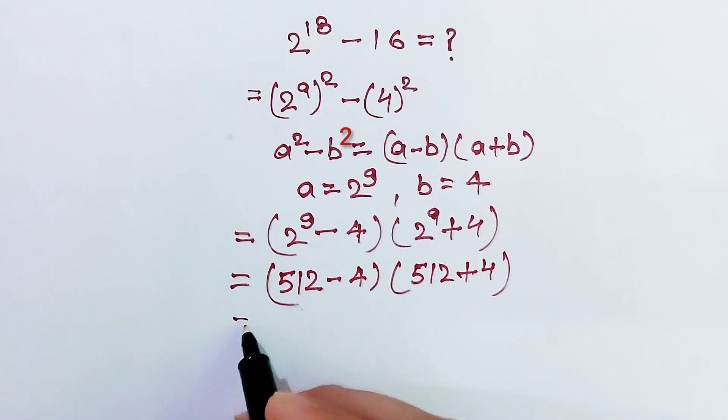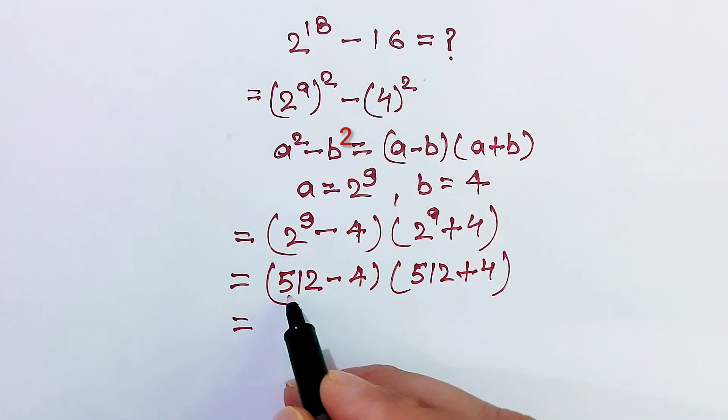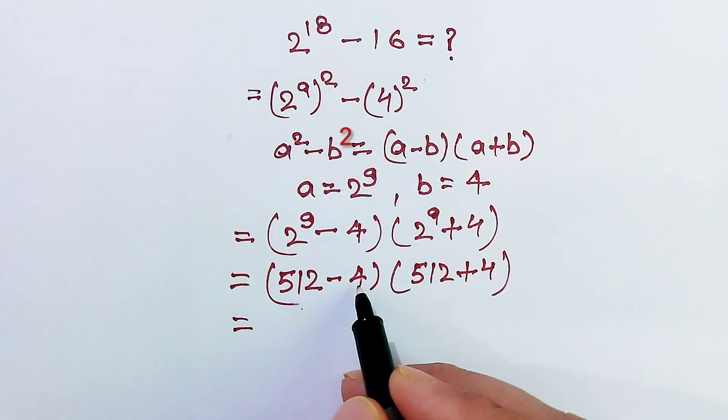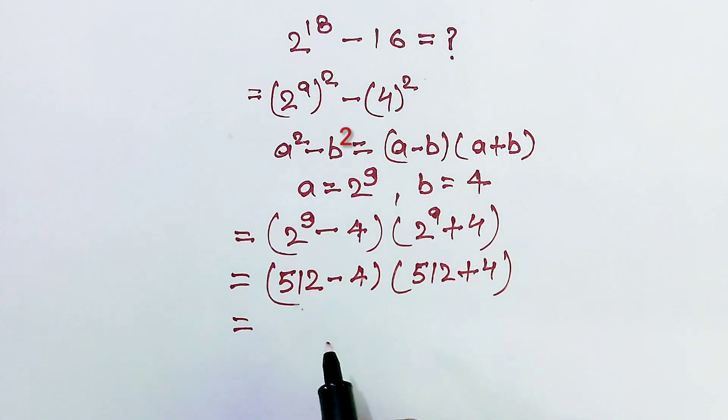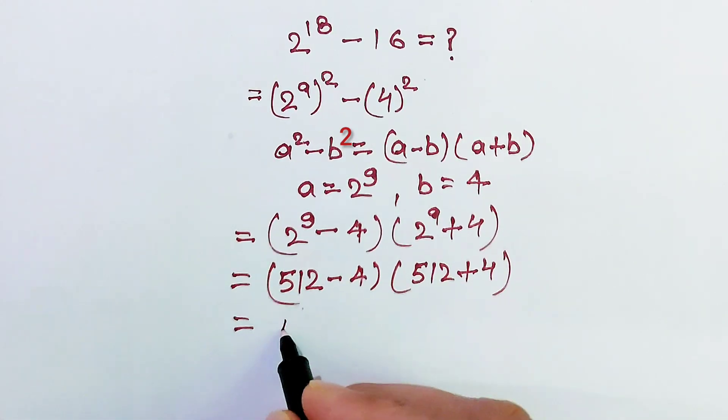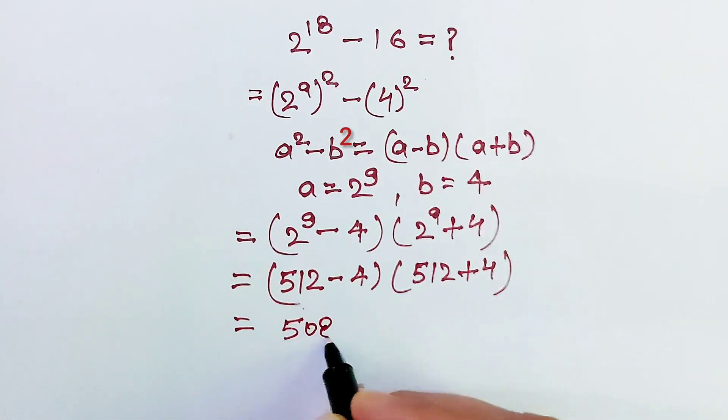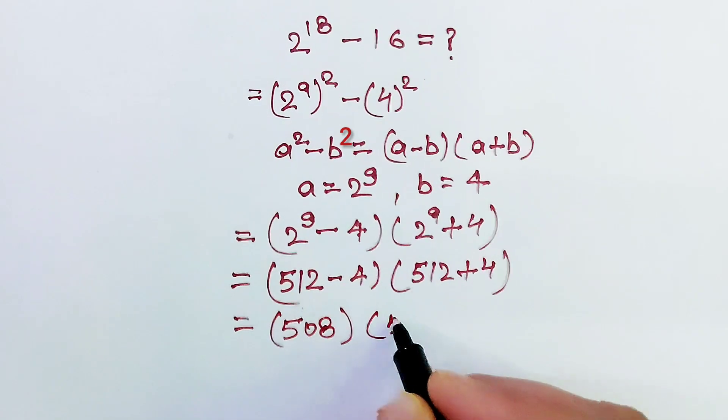Now 512 minus 4 is 508 and 512 plus 4 is 516.